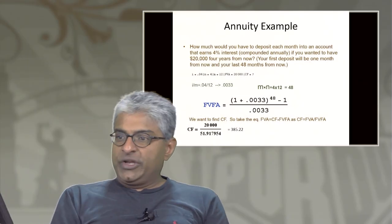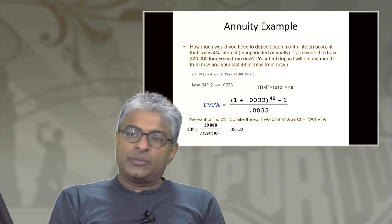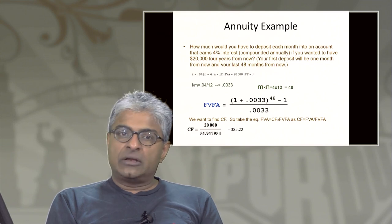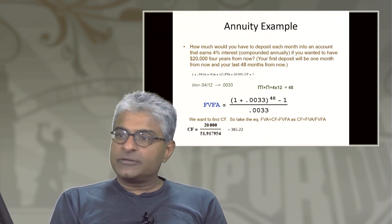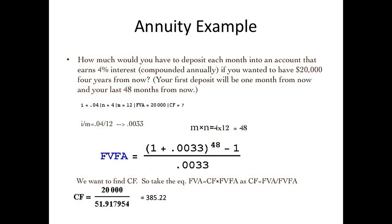Here's another example of an annuity, a story problem. Let's read through this to understand what the coded words are that we need to solve the problem. How much would you have to deposit each month into an account that earns 4% interest compounded annually if you wanted to have $20,000 in four years from now? Your first deposit will be in one month and will last 48 months from then.